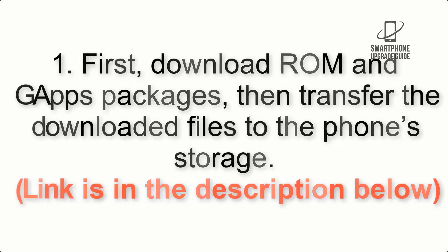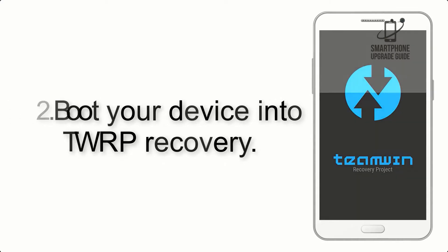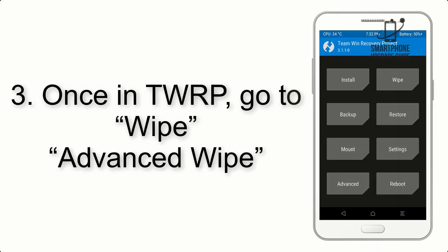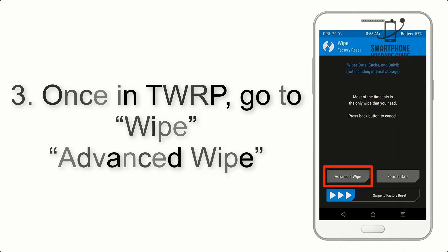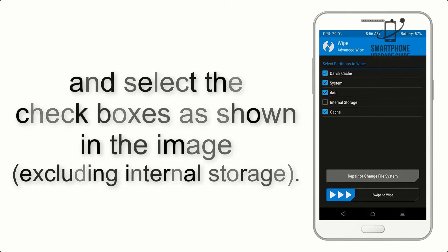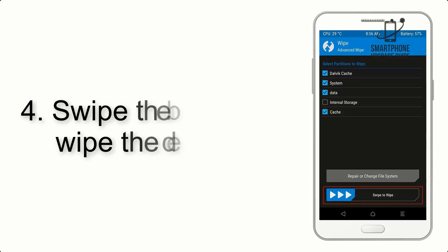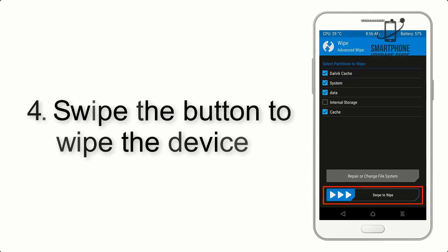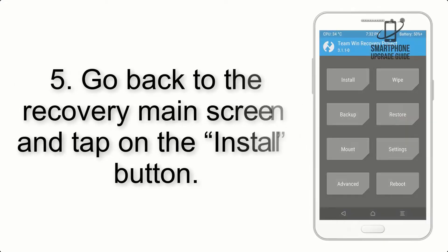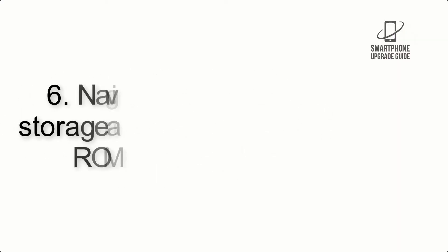Step 2: Boot your device into TWRP recovery. Once in TWRP, click on Advanced Wipe and select the checkboxes as shown in the image, excluding internal storage. Step 4: Swipe the button to wipe the device.